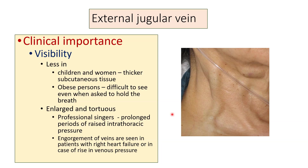An enlarged and tortuous vein can be seen in professional singers, because of prolonged periods of raised intrathoracic pressure during singing. In this picture, you can see a prominent external jugular vein. Engorgement of these veins filled with blood is also seen in patients with right heart failure or raised venous pressure.